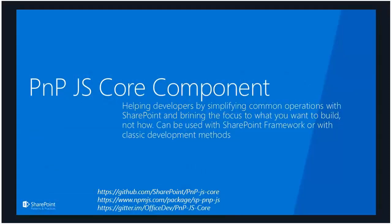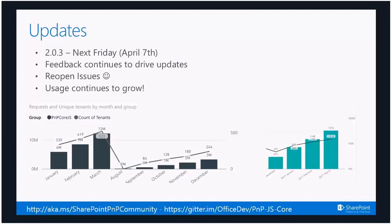Quick update on the JavaScript core component: version 2.0.3 is going to be released next Friday, April 7th. That will include everything that's been merged into dev. We're working with milestones now in the issues list to give everybody a better view into what's going to be part of each release. Feedback continues to drive the updates — for example, the permission stuff we'll show shortly, as well as finding and fixing bugs. Please do continue to bring that feedback to us.